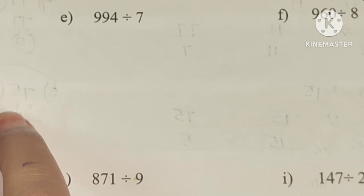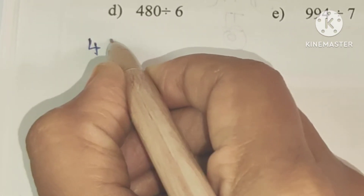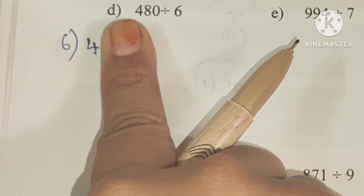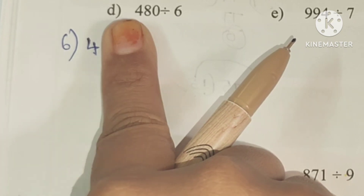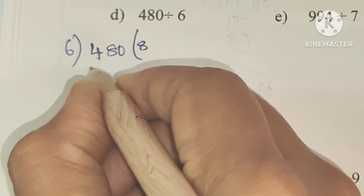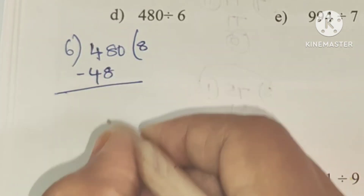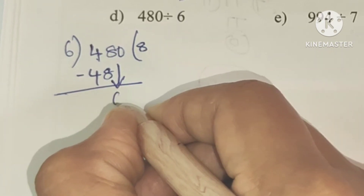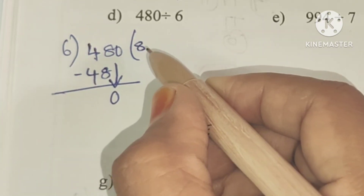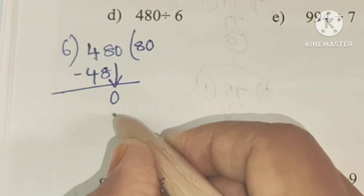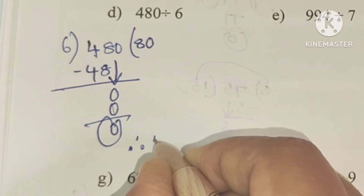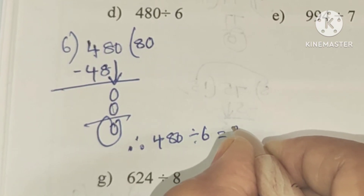D: 480 divided by 6. First number 4 is smaller than 6, so we take two digits: 48. 6 eights are 48, after subtracting 0 remains. Next number 0 comes down. We divide 0 by 6 — zero times, 6 zeros are 0, remainder 0. So 480 divided by 6 equals 80.